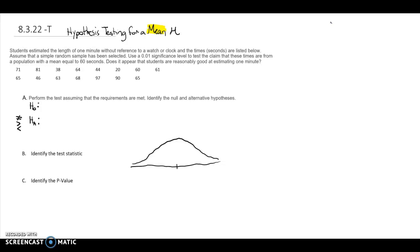In this video we'll be reviewing question 8.3.22-T from the 8.3 MyLab homework, reviewing hypothesis testing for a mean mu. The question reads: students estimated the length of one minute without reference to a watch or clock, and the times in seconds are listed below — there are 15 of them. Assume a simple random sample has been selected. Use a 0.01 significance level to test the claim that these times are from a population with a mean equal to 60 seconds. We are asked to perform a null and alternative hypothesis test assuming requirements are met.